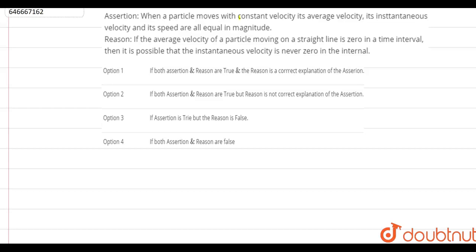Hello everyone. The assertion is: when a particle moves with a constant velocity, its average velocity, instantaneous velocity, and speed are all equivalent. The reason is: if the average velocity of a particle moving in a straight line is zero in a time interval, then it is possible that the instantaneous velocity is never zero. We have to find out whether these statements are true or false, and whether the reason is the correct explanation of the assertion.